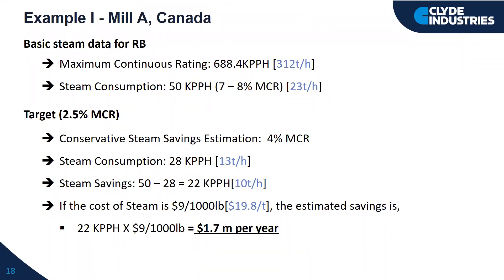Here's an example from a mill in Canada. They were producing around 312 metric tons per hour of steam and were consuming around 23 tons per hour in soot blowing, or about 50 kilopounds. This amounts to between 7 to 8% of boiler steam production. If we are able to drive this towards 4%, we should be able to save around 10 tons per hour or 22 kilopounds. For this plant, the cost of steam was about $20 a ton, which would give an annual savings of around $1.7 million.